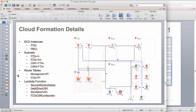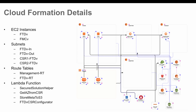These are the Cloud Formation templates used in this demo. It will create two CSR instances including FTD Virtual and FMC Virtual. It will also create four subnets: FTDv inside used by the FTD, FTDv outside used by the FTD, and two subnets connecting the CSRs — one for CSR1 to FTD Virtual and the other for CSR2 to FTD Virtual.